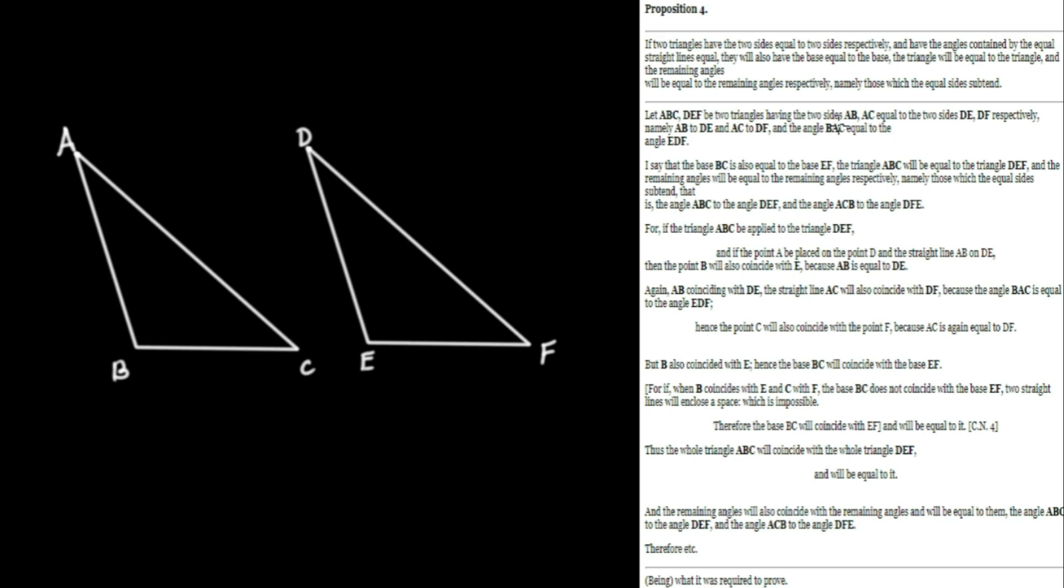Having the two sides AB and AC equal to the two sides DE and DF respectively. So AB is going to be the same as DE. And AC is going to be the same as DF. And the angle BAC equal to the angle EDF.